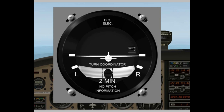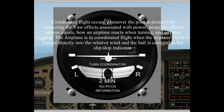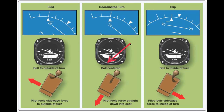You also need to understand what coordinated flight and uncoordinated flight is. The Airplane Flying Handbook describes it like this: coordinated flight occurs whenever the pilot is proactively correcting for yaw effects associated with the power of the engine, the propeller effects, aileron inputs, how the airplane reacts when turning, and the airplane rigging. The airplane is in coordinated flight when the airplane's nose is yawed directly into the relative wind and the ball is centered in the skid slip indicator.